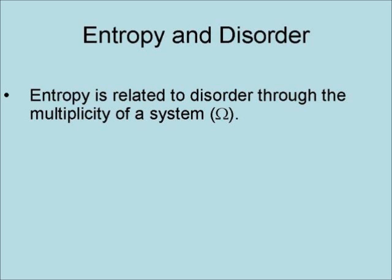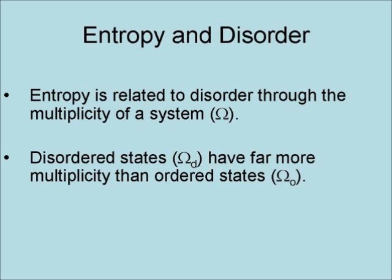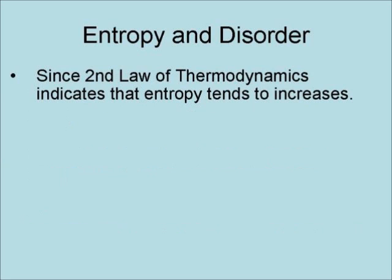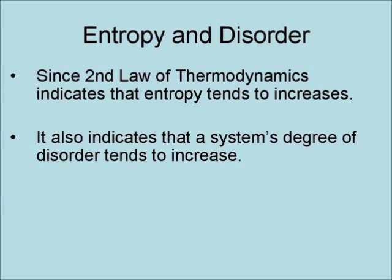Entropy is related to disorder through the multiplicity of a system. Disordered states have far more multiplicity than ordered states, such that omega-disordered is much greater than omega-ordered. This means that entropy-disordered is much greater than entropy-ordered. Since the second law of thermodynamics indicates that entropy tends to increase, it also indicates that a system's degree of disorder tends to increase.